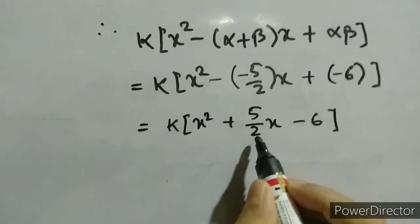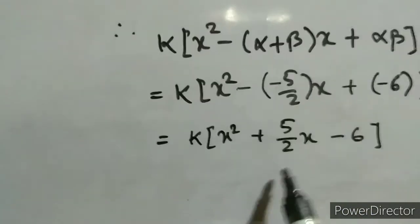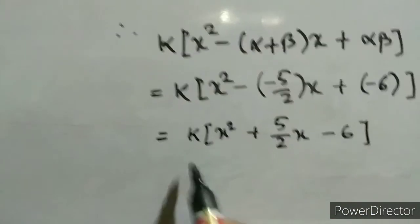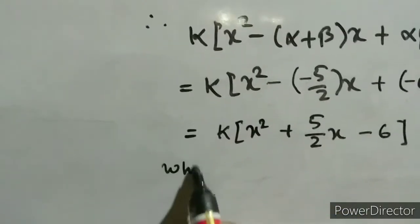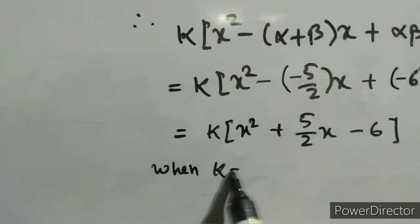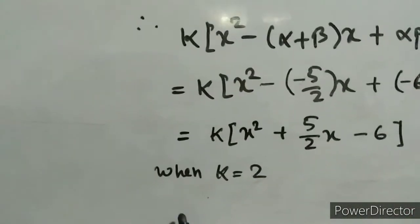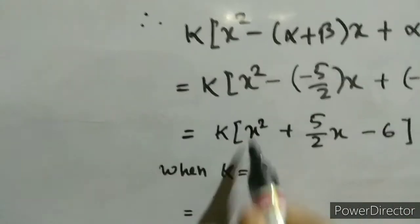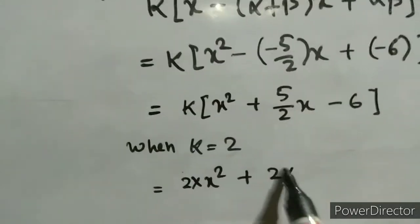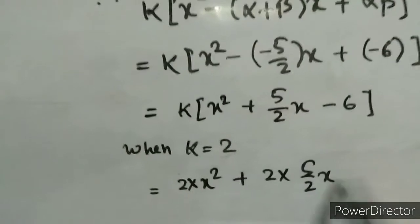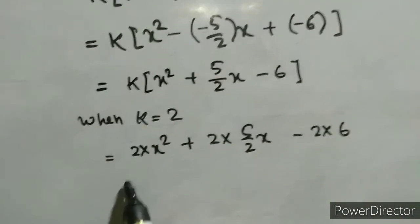Now look at the denominator. Since the denominator is 2, we take k equal to 2. If the denominator were 1, then k would be 1. Since the denominator is 2, we take k equal to 2, which means we multiply everything by 2. So: 2 times x squared, plus 2 times (5 by 2) times x, minus 2 times 6.